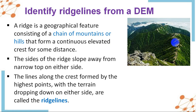You already know from the DEM data how to extract a stream network. The method for ridge lines is exactly the opposite — the reverse. Instead of extracting stream lines from the DEM, we are going to extract the top elevation points, and if we join those top elevation points we can create a line which is called a ridge line.